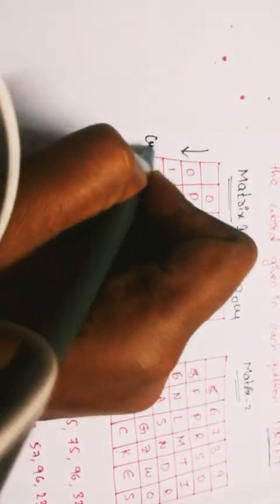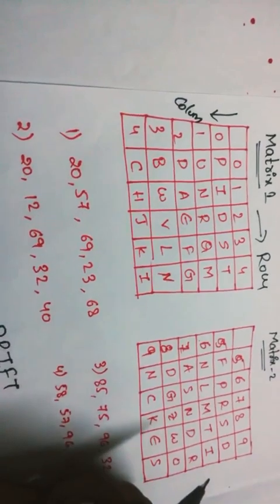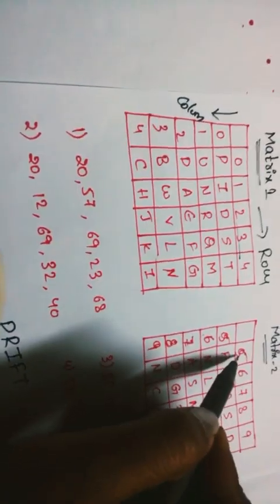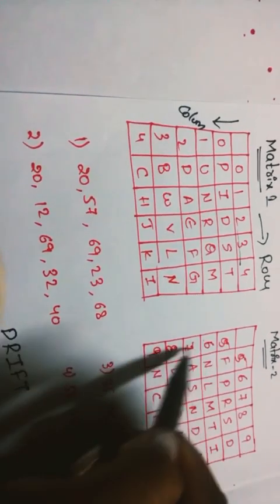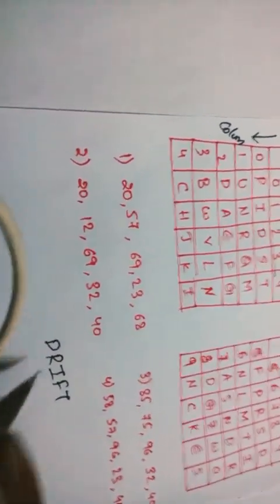In Matrix 1, rows and columns are numbered 0 to 4. In Matrix 2, rows and columns are numbered 5 to 9. We need to find the code for the word 'DRIFT'.